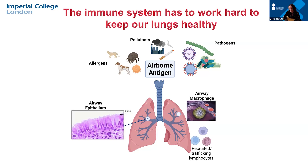The immune system in the lungs is complex — there are immune cells recruited to the lung in response to danger signals, but also immune cells which are resident within the lungs as their natural home. We're interested in how those recruited and transient immune cells, as well as the resident immune cells, interact with the structural cells of the lung, particularly epithelial cells which line the airway — the breathing tubes.